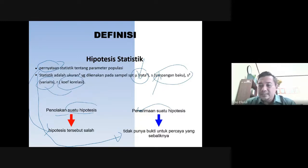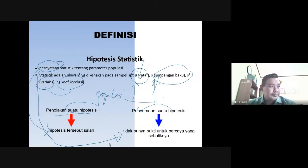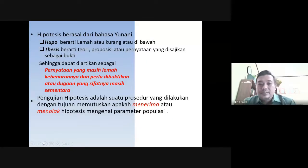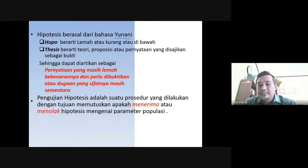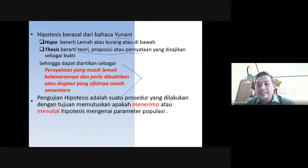Dalam hal ini kita akan menguji apakah ukuran dalam populasi seperti rata-rata dan simpangan baku itu benar-benar menyatakan bagian dari populasinya — dalam hal ini adalah populasi sampelnya. Hipotesis sendiri merupakan sebuah kata yang asalnya dari bahasa Yunani. 'Hippo' artinya adalah lemah atau kurang atau di bawahnya. Kemudian 'tesis' bisa diartikan sebagai teori, proporsi, atau pernyataan.